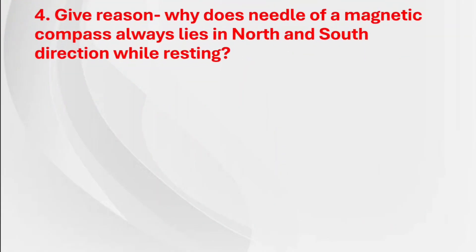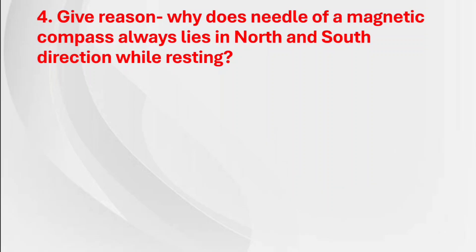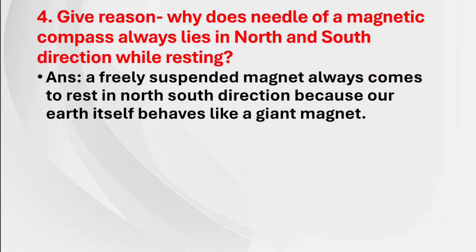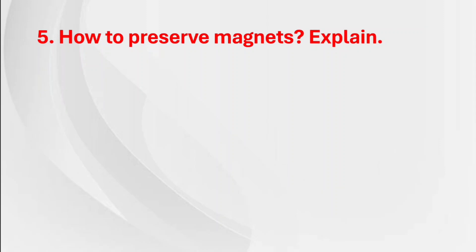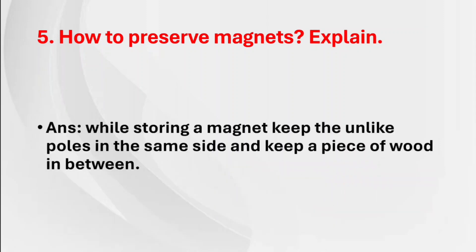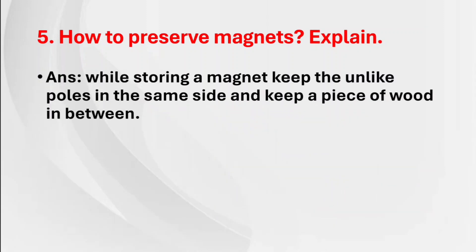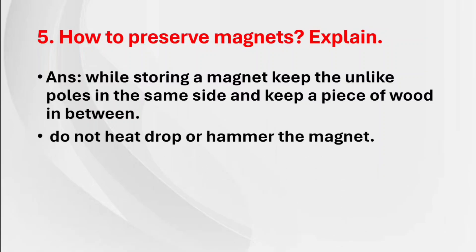Fourth question: Give a reason — why does the needle of a magnetic compass always lie in the north-south direction while resting? Answer: A freely suspended magnet always comes to rest in the north-south direction because the earth itself behaves like a giant magnet. Fifth question: How to preserve magnets? Answer: While storing a magnet, keep the unlike poles on the same side and keep a piece of wood in between. Do not heat, drop, or hammer the magnet.